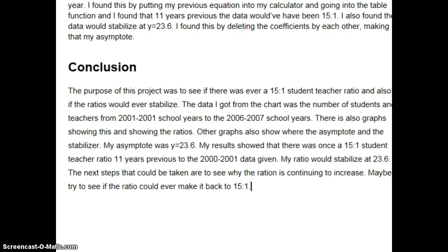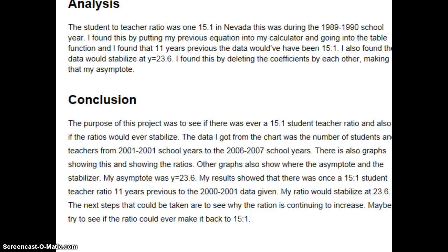For my analysis, the student to teacher ratio was once 15 to 1 in Nevada. This was during 1989 to 1990. I found this by putting the equation in my calculator and going to the table function, and found that at negative 11 — so 11 years previous — the data would have been at 15 to 1.